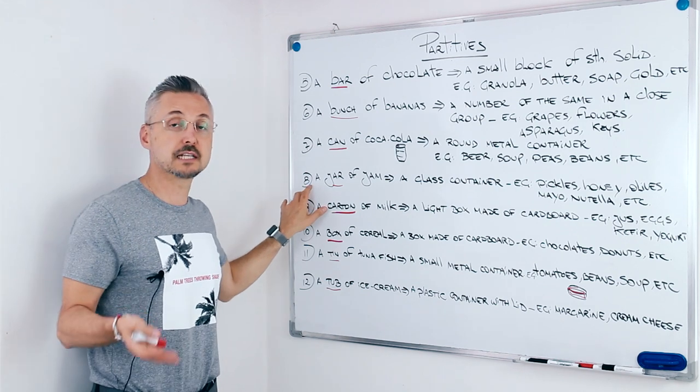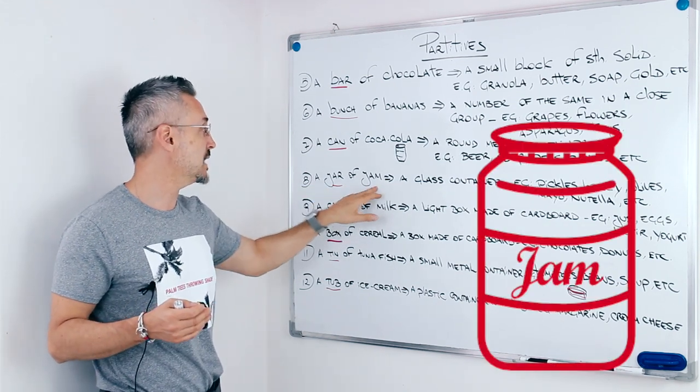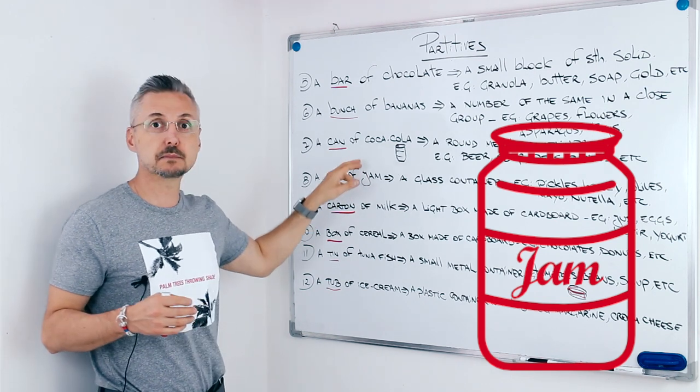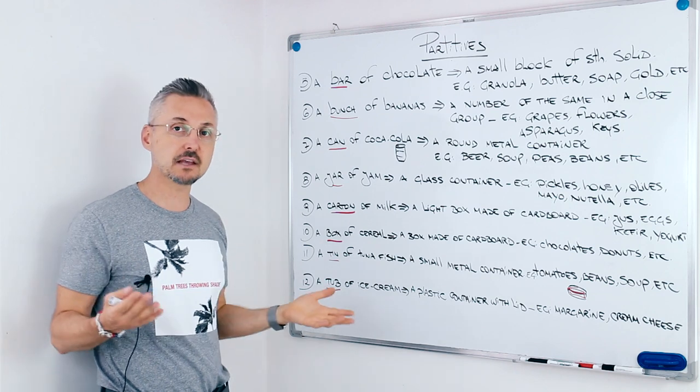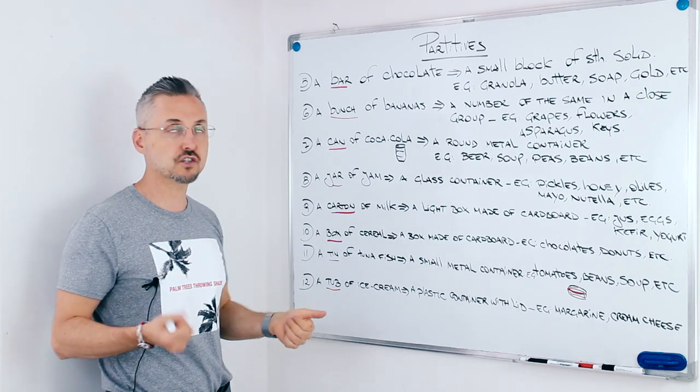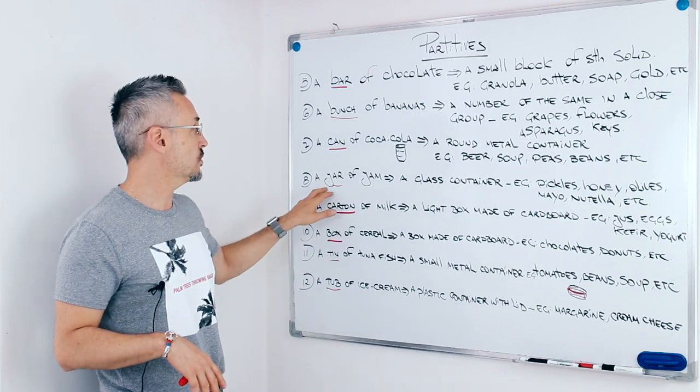The next one is a jar. A jar of jam, a jar of marmalade. The difference between marmalade and jam: jam is anything but orange, lemon or grapefruit.